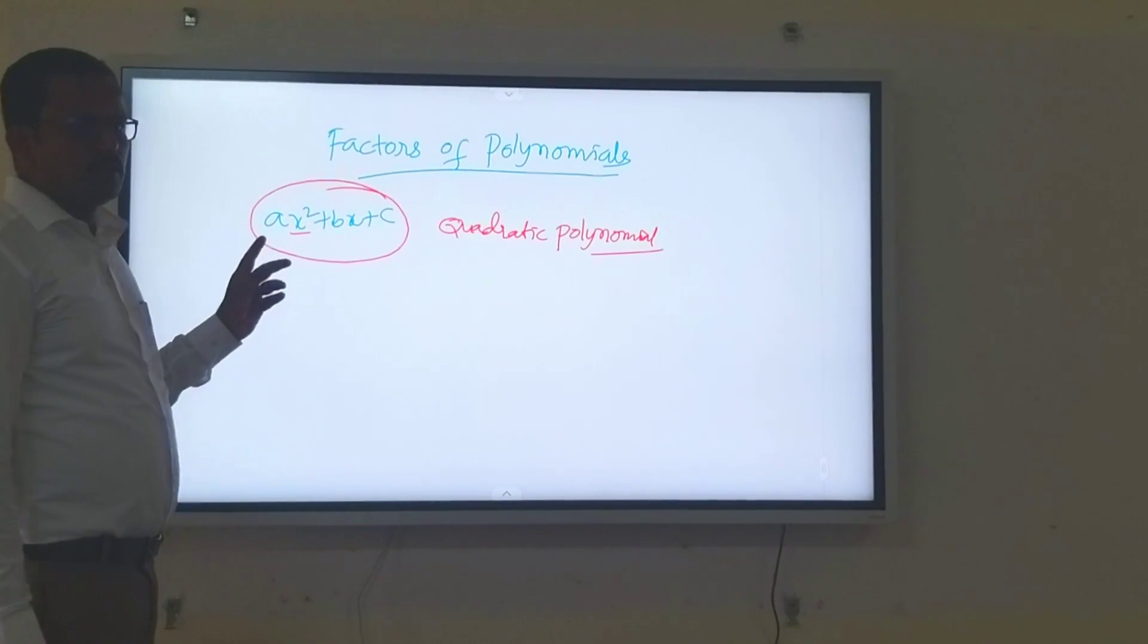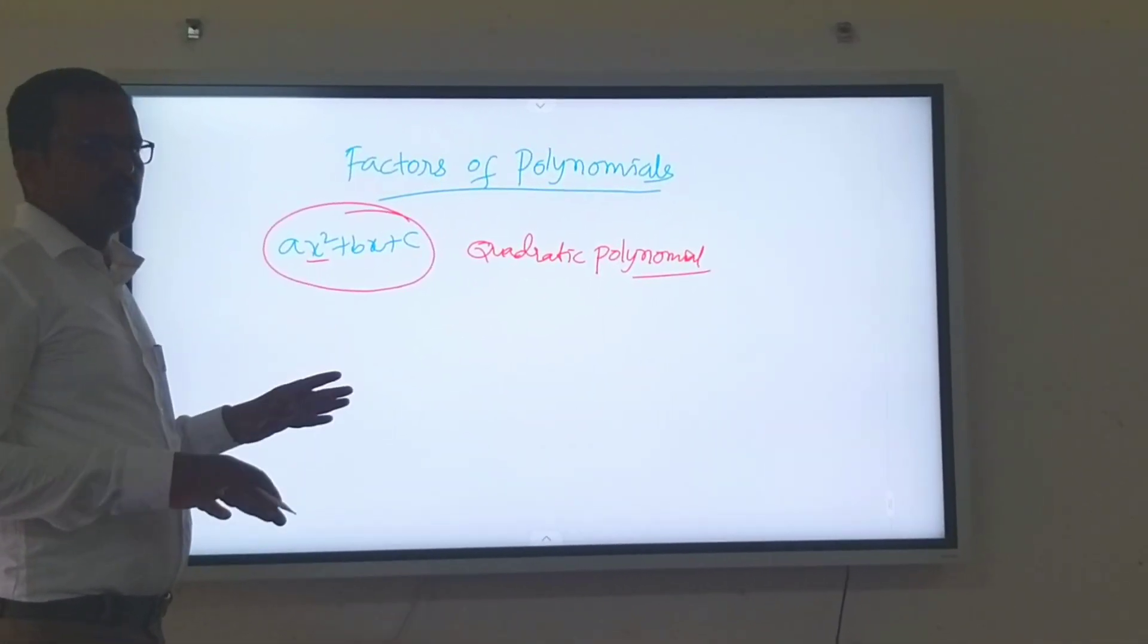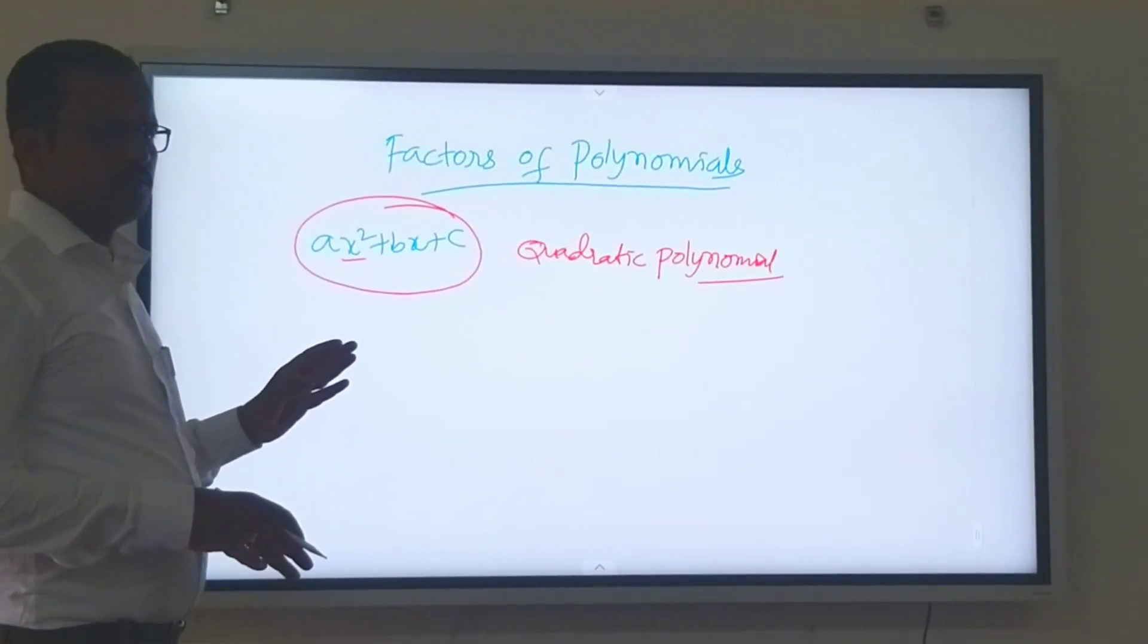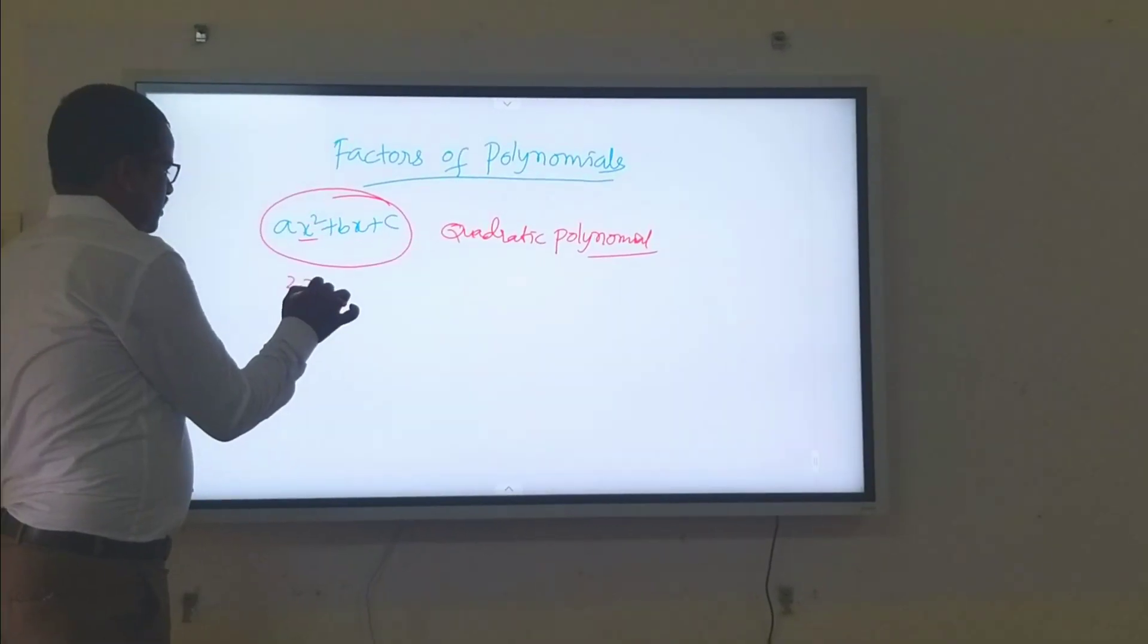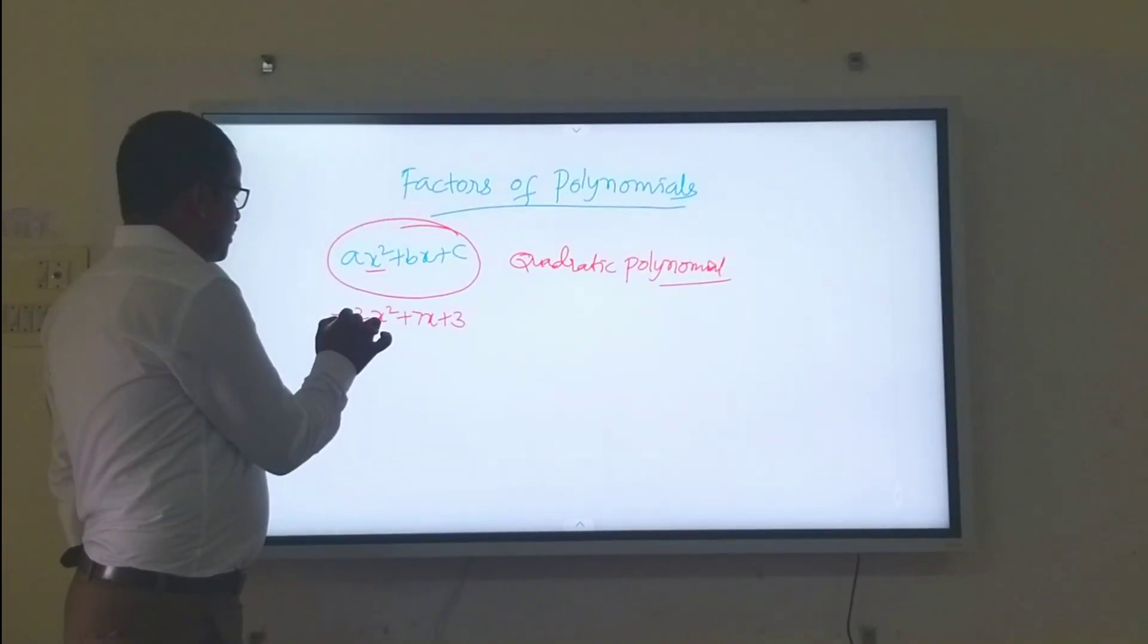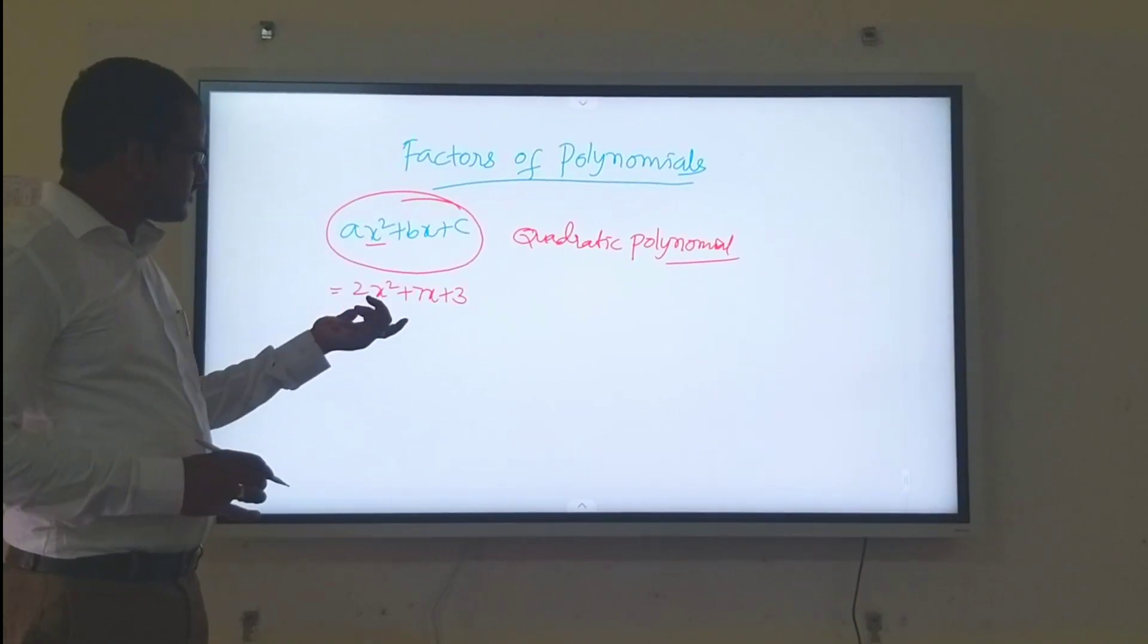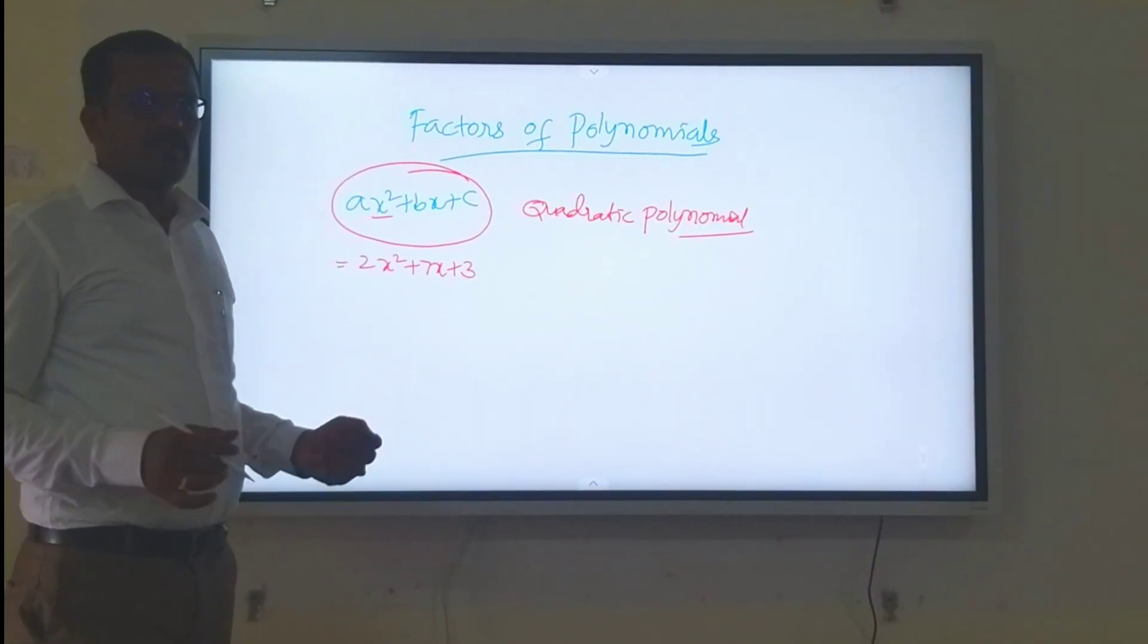Today we learn about how we factorize the polynomials. Here we have simple steps, only one or two steps. The example is 2x squared plus 7x plus 3. Today we learn about how to split this given polynomial into factors.